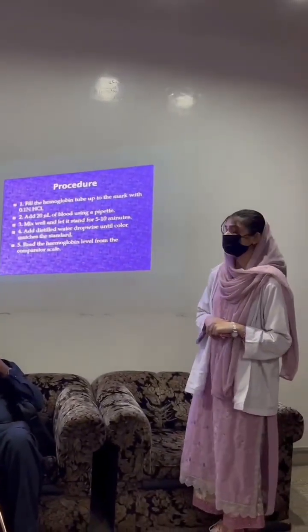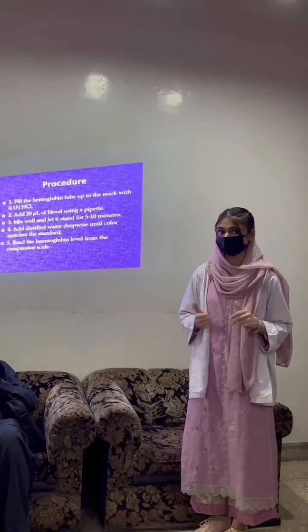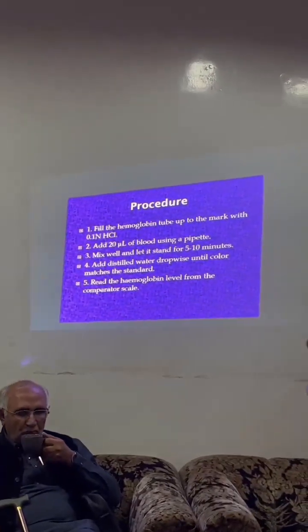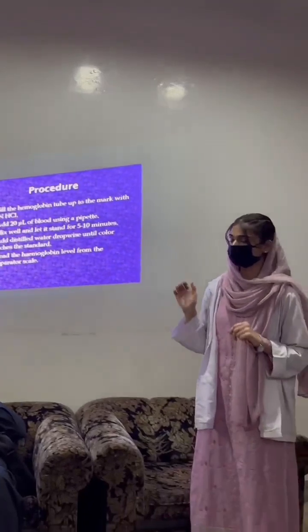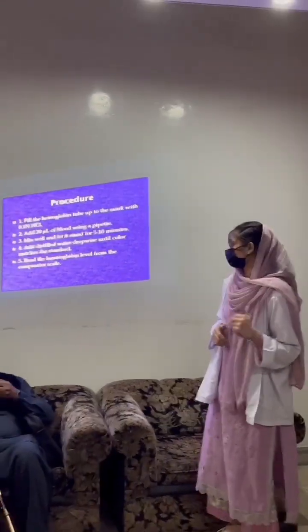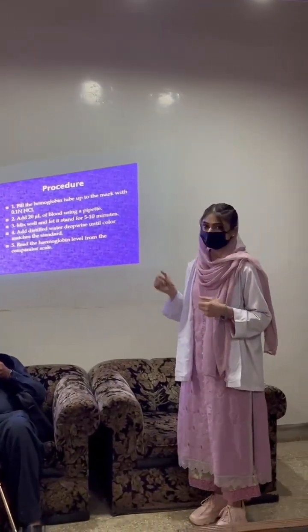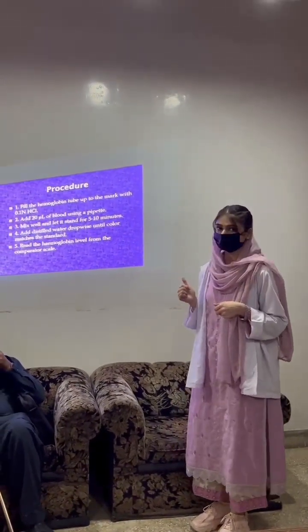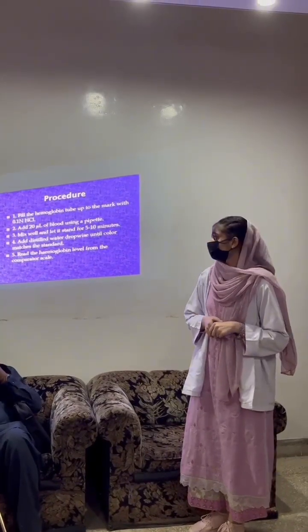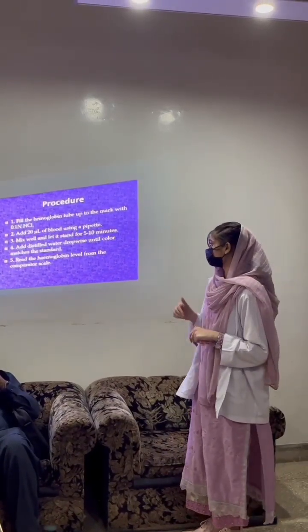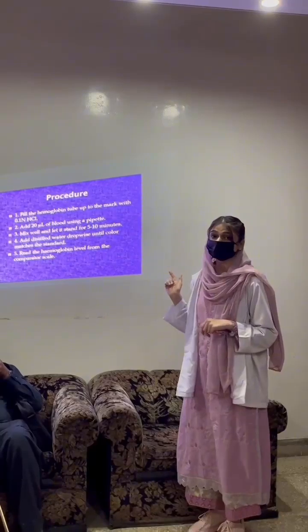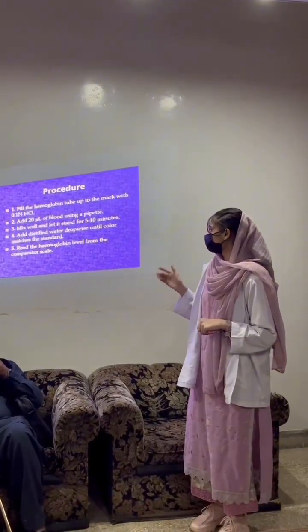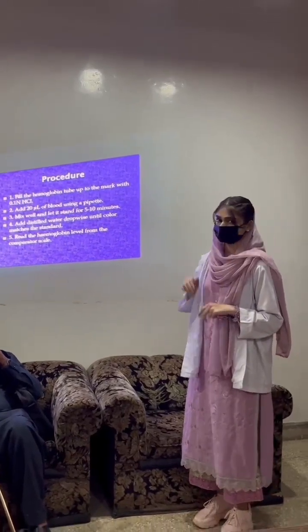Now the procedure — there are five steps. In the first step, fill the hemoglobin tube up to the mark with 0.1N HCl. In the second step, add 20 microlitres of blood using the pipette. In the third step, mix well and leave it to stand for 5 to 10 minutes. In the fourth step, add distilled water drop by drop until the color matches the standard. In the fifth step, read the hemoglobin level from the comparator scale.